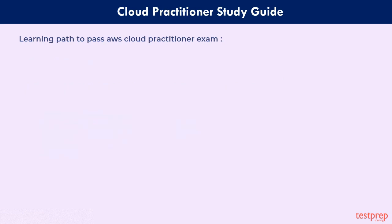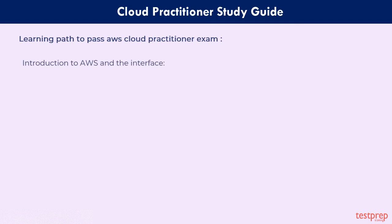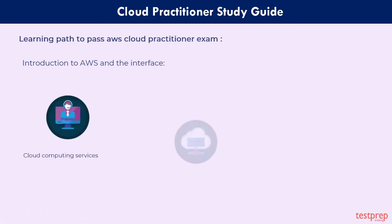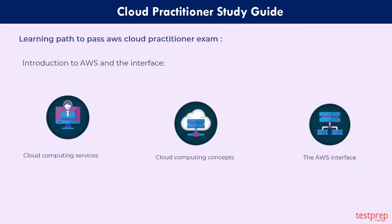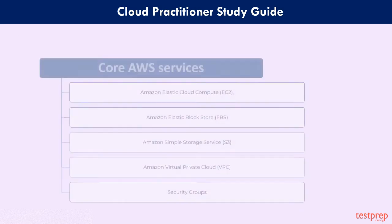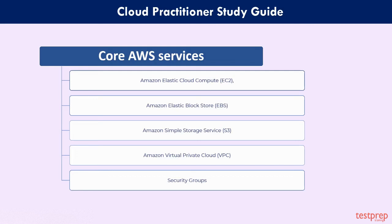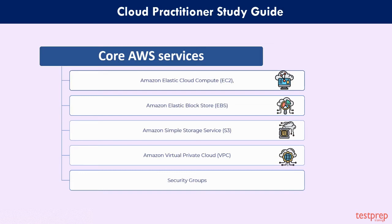You can follow the path laid out here. First, Introduction to AWS and the Interface — start with learning about the basic cloud computing services and concepts in the AWS interface; you can begin by making an AWS free tier account. Second, Core AWS Services — you will start learning about the following: Amazon Elastic Cloud Compute (EC2), Amazon Elastic Block Store (EBS), Amazon Simple Storage Service (S3), Amazon Virtual Private Cloud (VPC), and Security Groups.